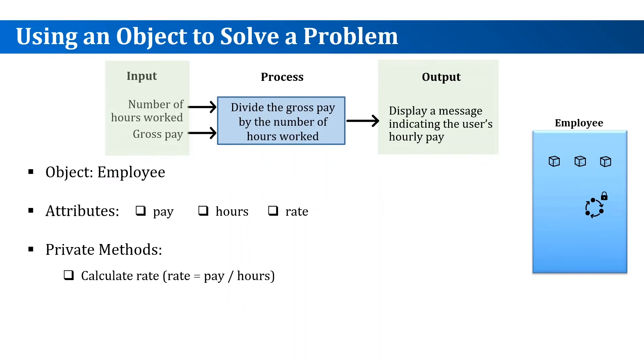An example of a private internal method would be the method that calculates the rate based on the pay and the hours attributes. Examples of public methods would be the methods that allow configuring the pay and hours attributes by setting their values, or retrieving the rate to external code. Now we have a full description of an employee object.